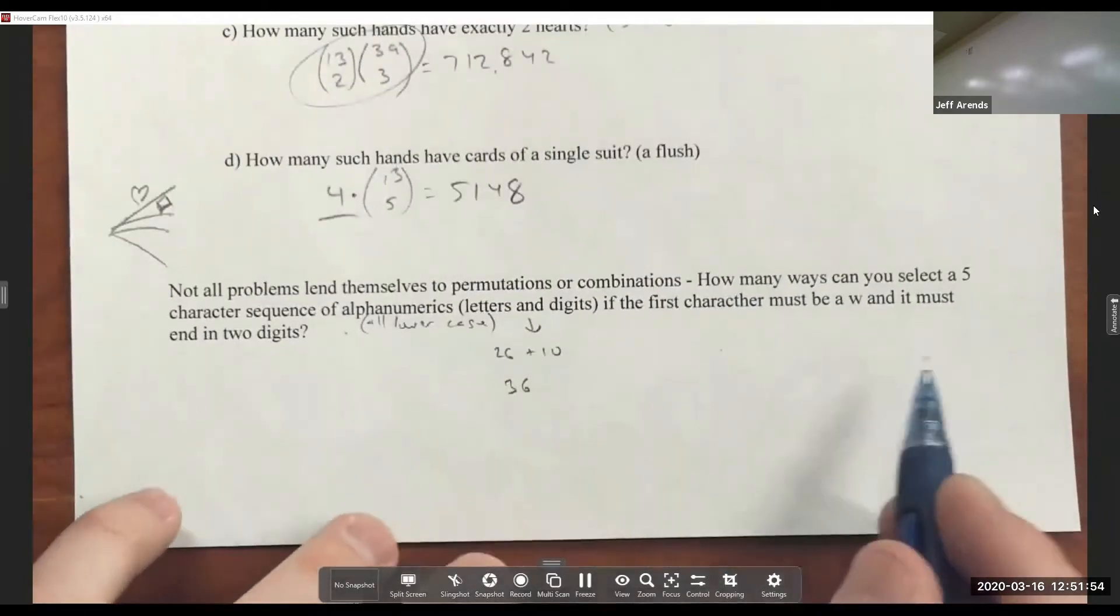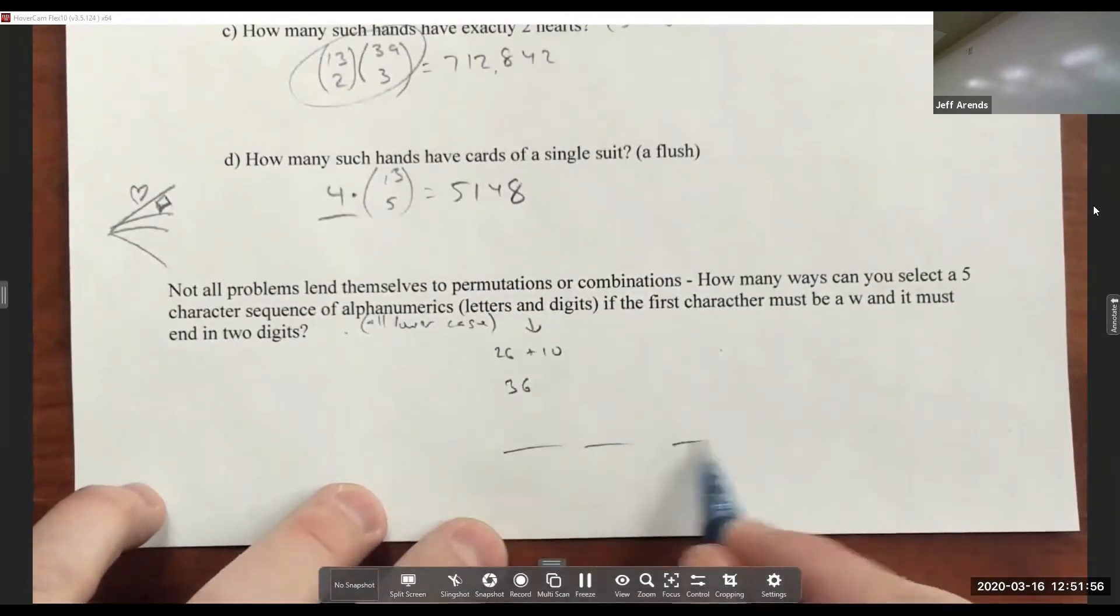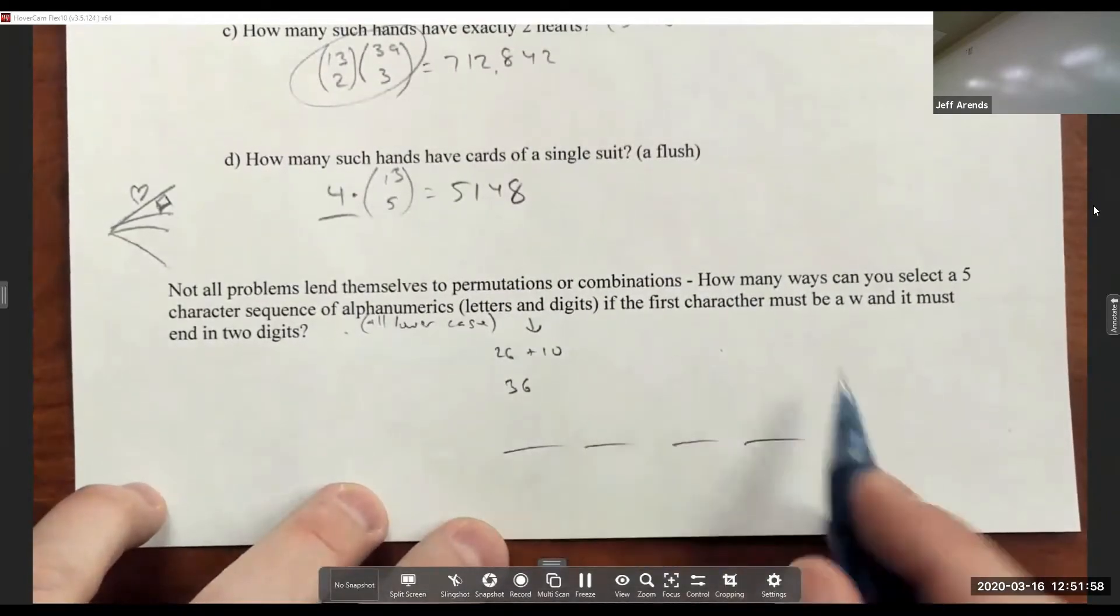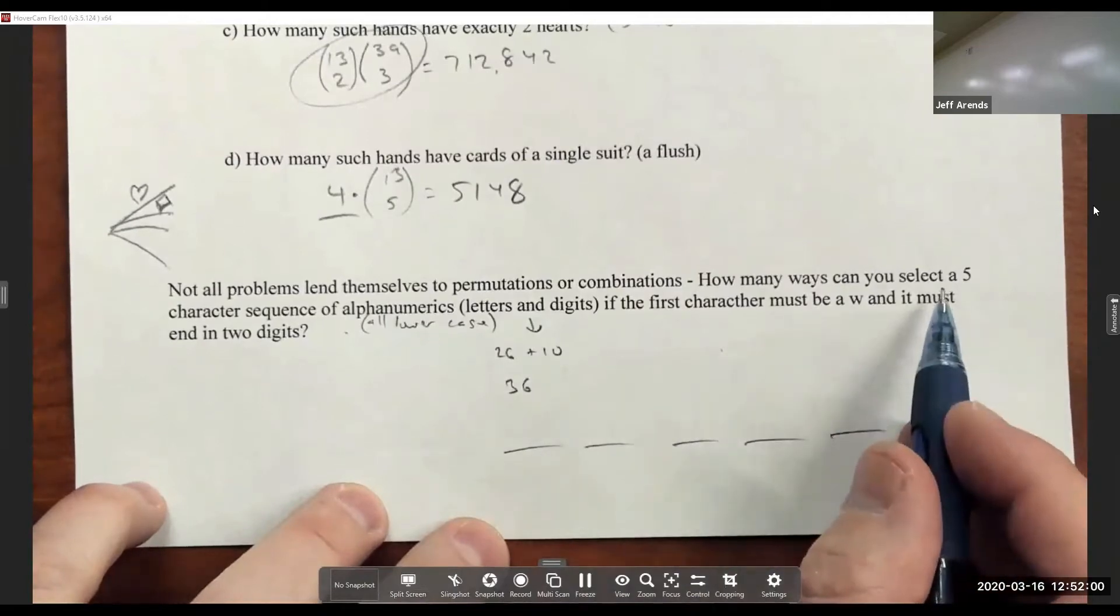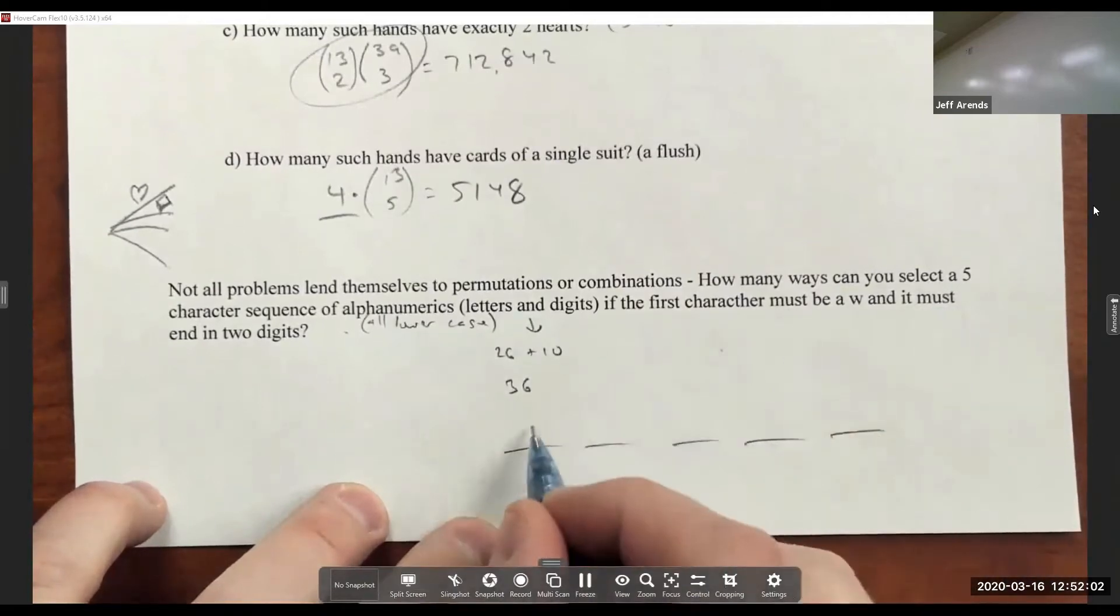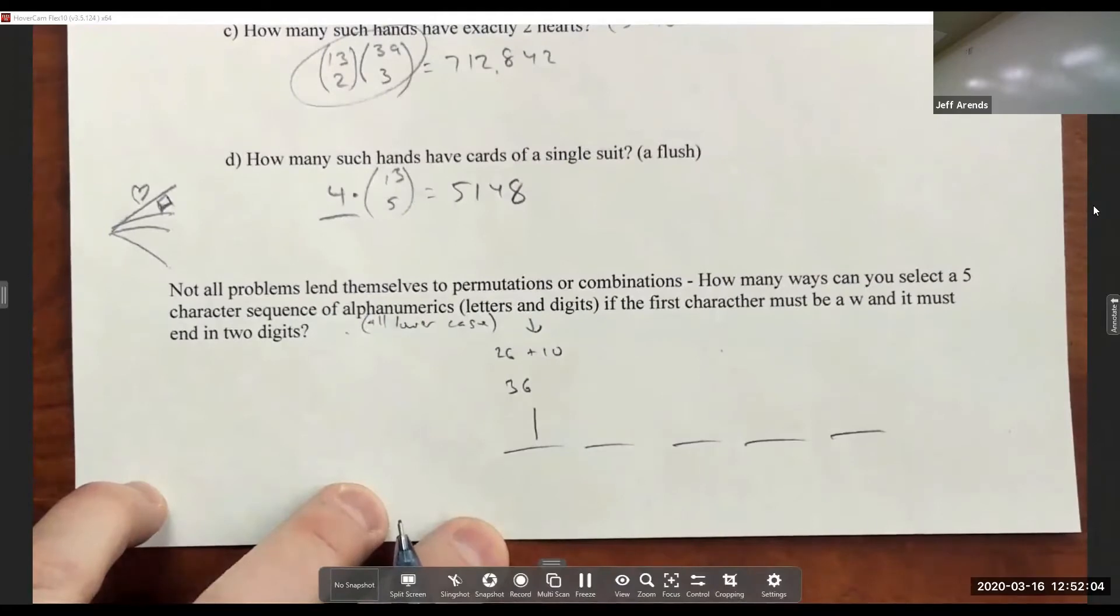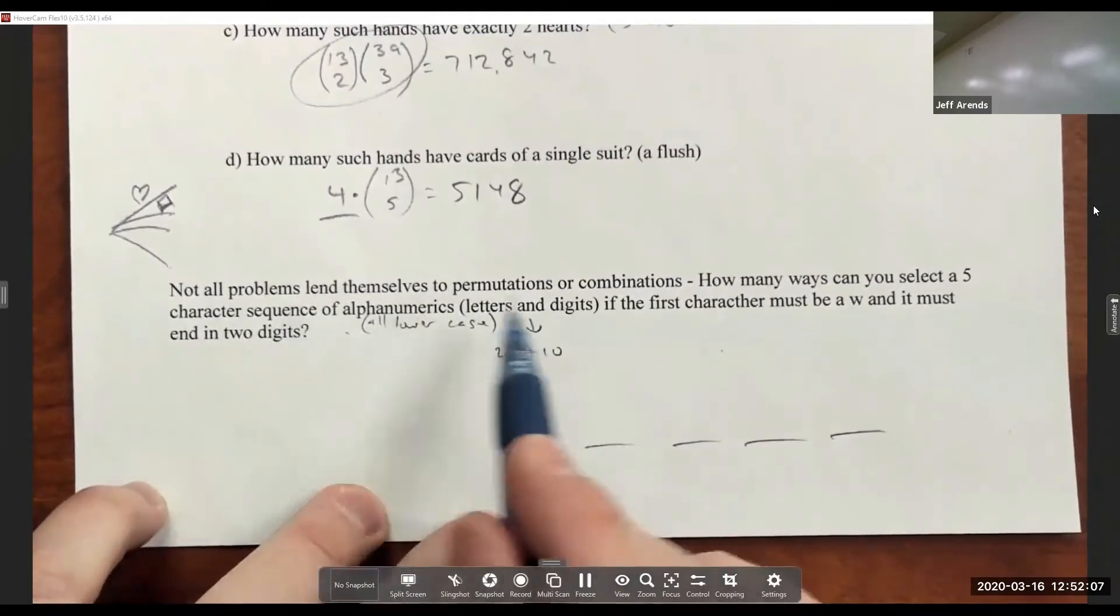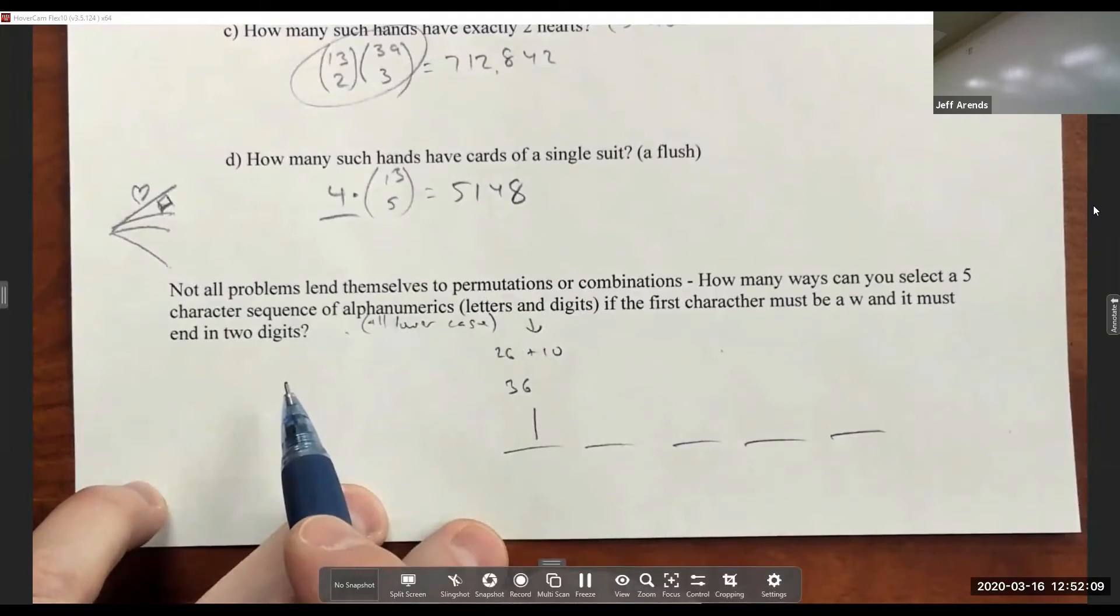This would definitely be a situation where you just want to use your multiplication principle. So we have five different choices to make. The first letter must be a W, so there's kind of not a choice there. This doesn't say anything about not being able to repeat letters.